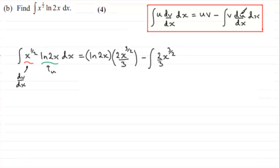And we multiply this by du by dx. So we need to differentiate the natural log of 2x, and we do this by the chain rule. So I'm assuming you're familiar with the chain rule. So it's going to be 1 over 2x, and then you multiply it by the differential of the 2x, which is 2.